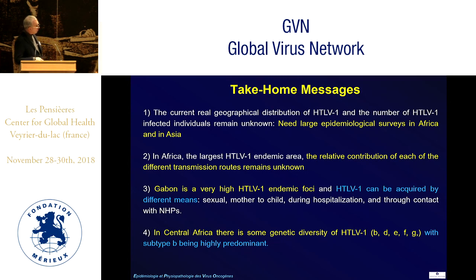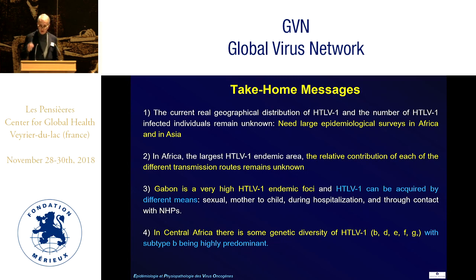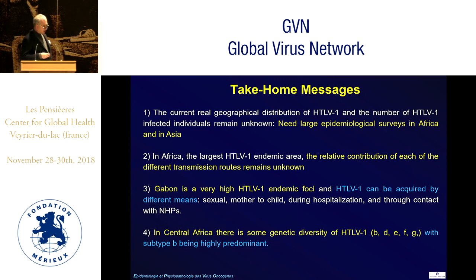The take-home messages: first, the current geographical distribution of HTLV-1 and the number of infected individuals worldwide remain unknown, and we really need large epidemiological surveys in Africa and Asia. Ongoing studies in India and China will give us strong data in the next few years. In Africa, the relative contribution of each transmission route remains quite unknown. Gabon is highly endemic with nearly 20–30% of the general population infected; it can be acquired by sexual, mother-to-child, hospitalization, contact, and other means. There is huge genetic variability of the viruses in Central Africa.